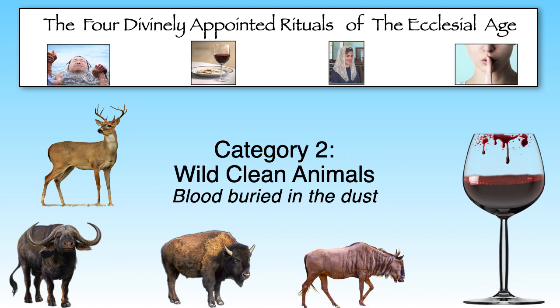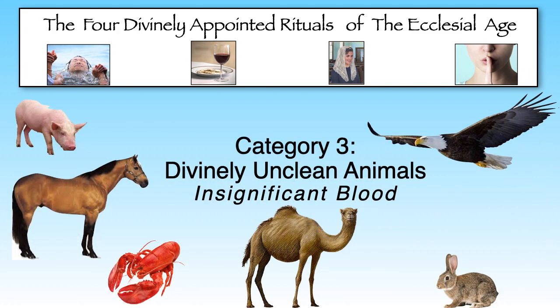Their blood was never welcome at the altar, despite the distinction that they did not jeopardize the physical holiness standards that God demanded. The blood of these clean but wild animals had to be poured into the dust and covered with dust. But the flesh of these clean but wild animals could be a divinely acceptable part of the diet of the enlightened community. The third animal category was also larger than the previous group — the largest group was the unclean animals whose blood was absolutely meaningless.